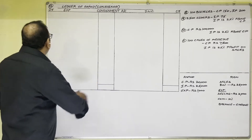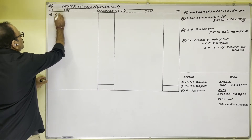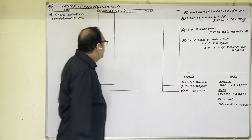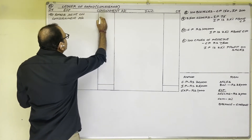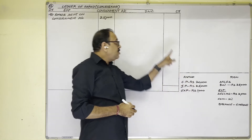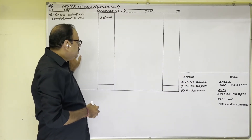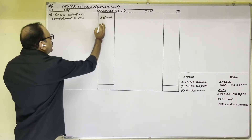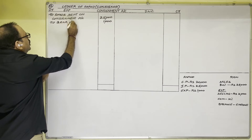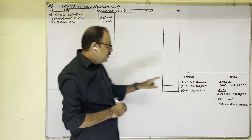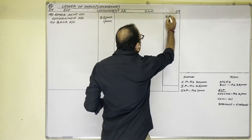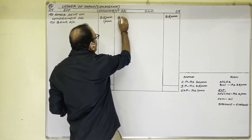On the debit side, goods are sent on consignment account. Here total goods cost price is given and total goods invoice price is given. When invoice price is given in the question, we write only the invoice price — 25,000 rupees — no calculations needed. Next, the consignor's expenditure of 1,000 rupees: consignment account is a nominal account, so nominal account rule says debit all expenses and losses. The entry is consignment account debit to bank account. Next, sales: 26,000 rupees. For consignment business, sales income goes to consignee who sold the goods, so write by Ram account.